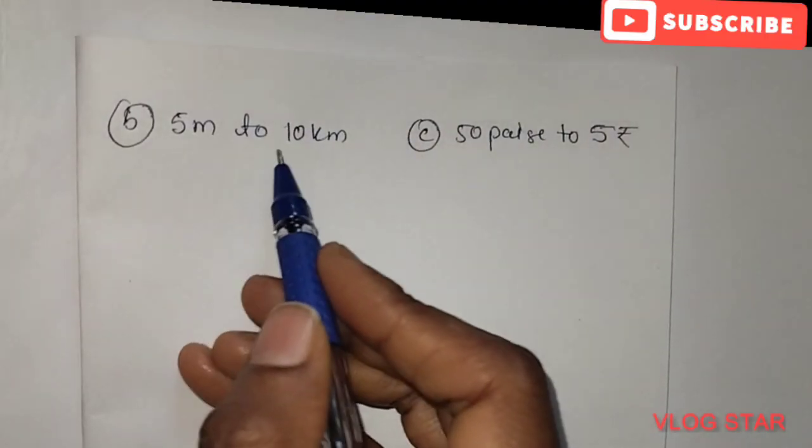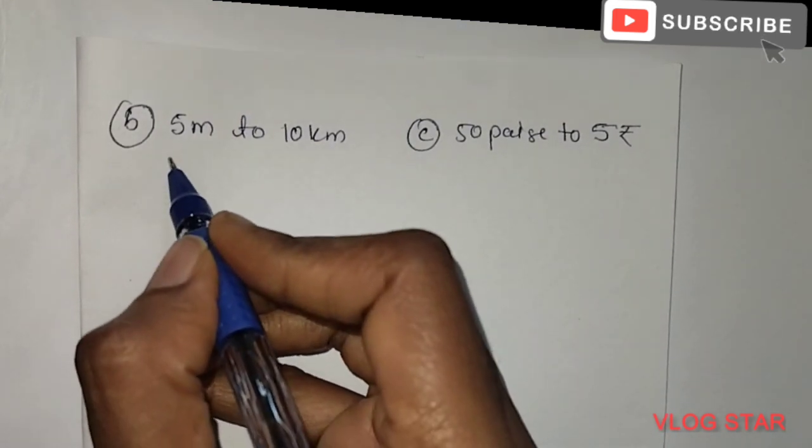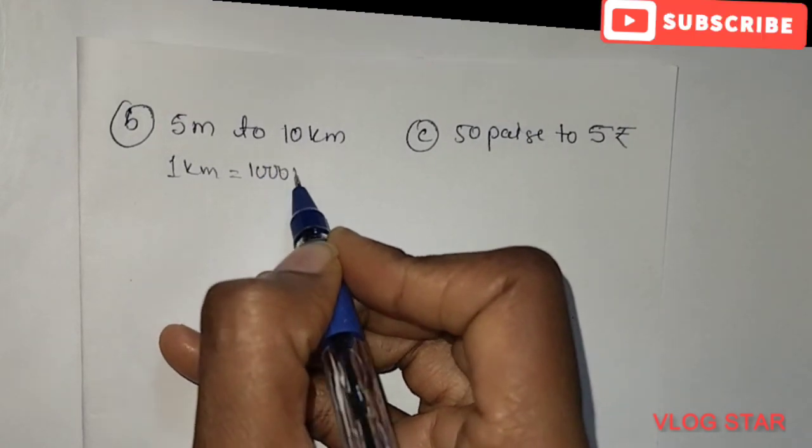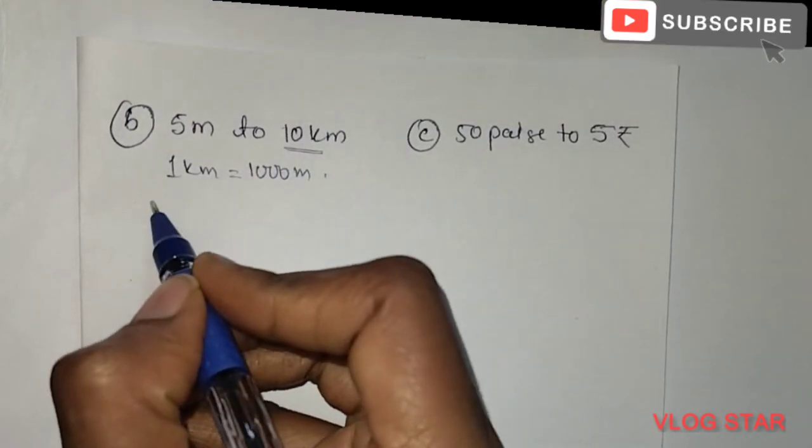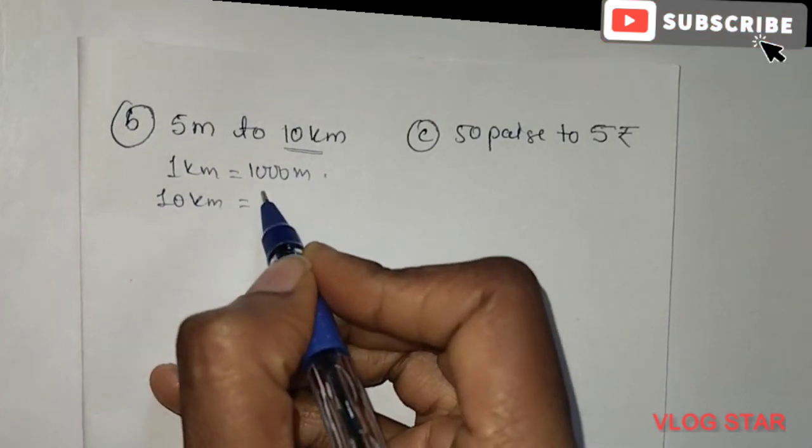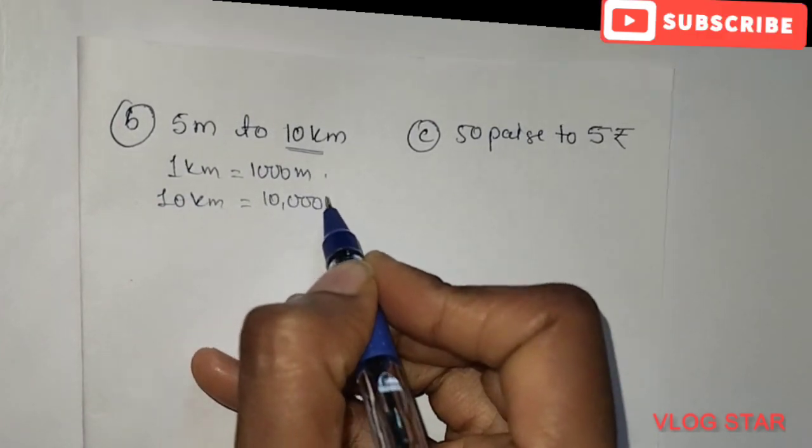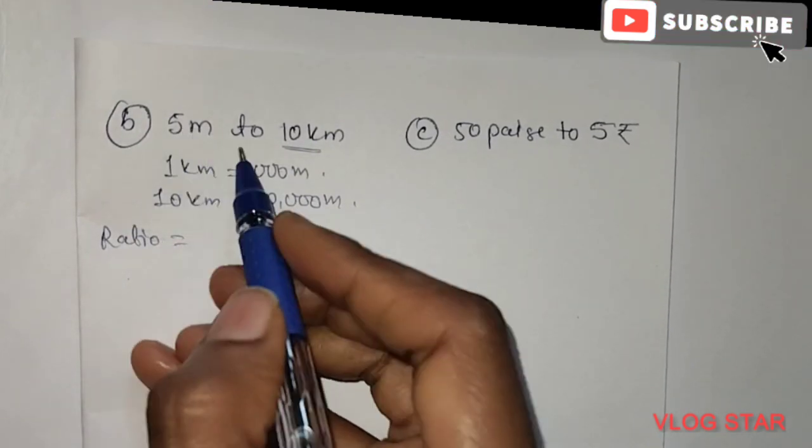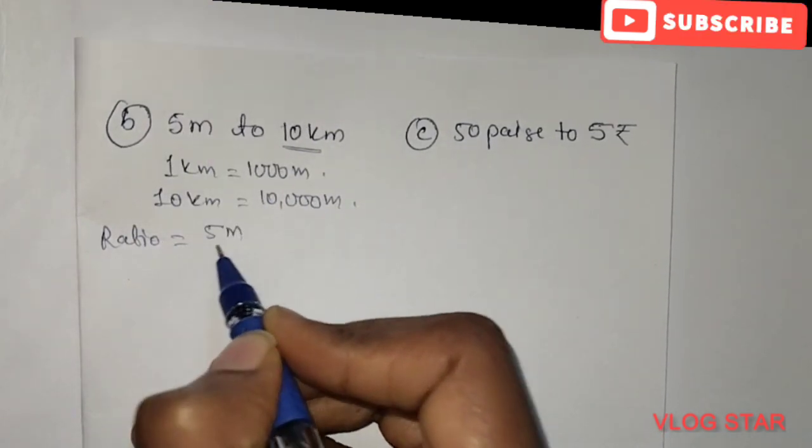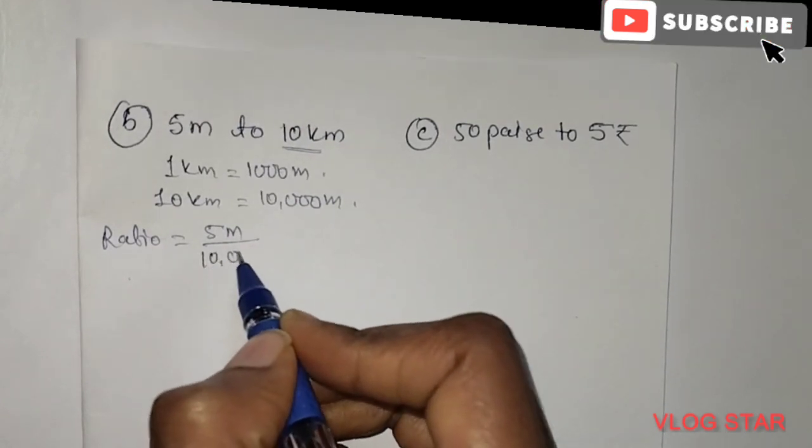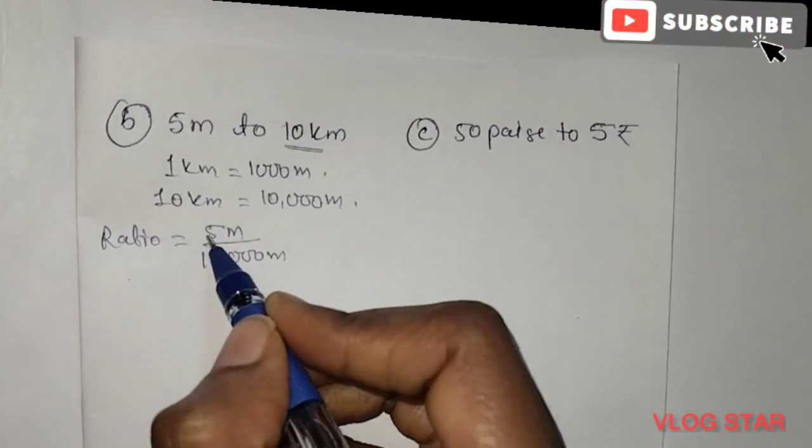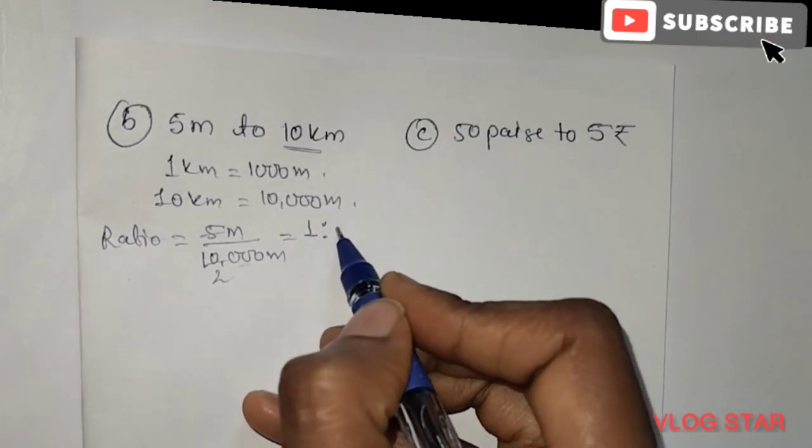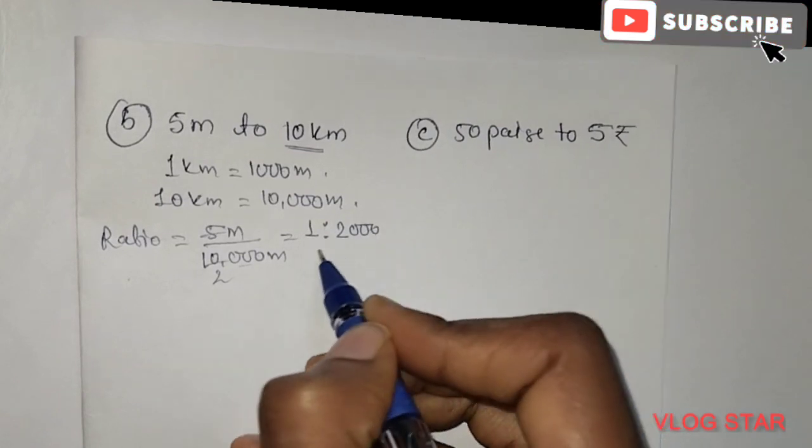Next, the second question is 5 meter to 10 kilometer. As we know, 1 kilometer is 1000 meter, so in 10 kilometer we have 10,000 meter. Now we find the ratio. The ratio is 5 meter to 10,000 meter. When we simplify, 1 is to 2000 is the ratio form.